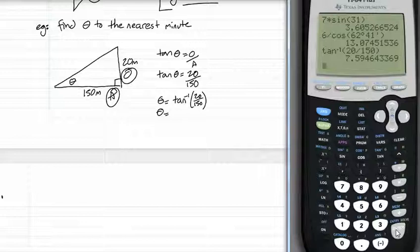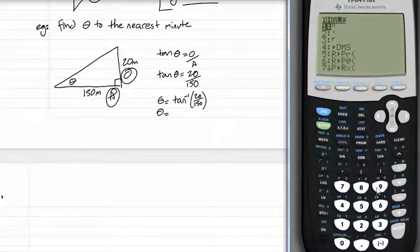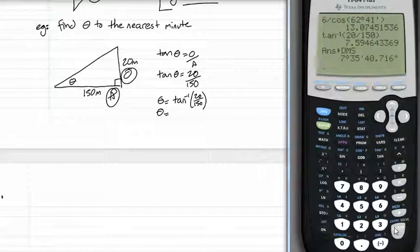Now we want to the nearest minute. That's in decimal. So of course second function and 4 for DMS. 7 degrees. Now it's 35 minutes. But the next seconds is 40. So 36 minutes. And we're done.